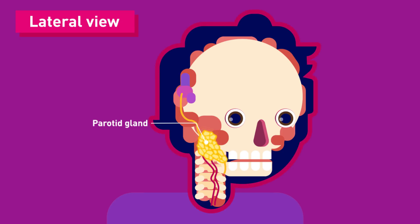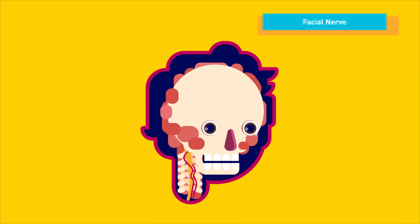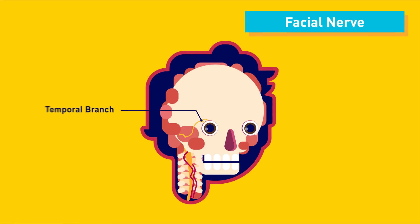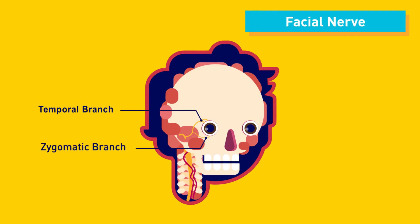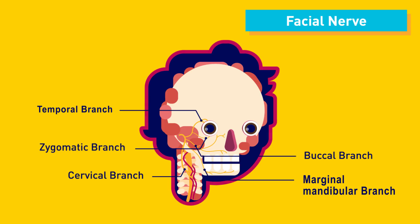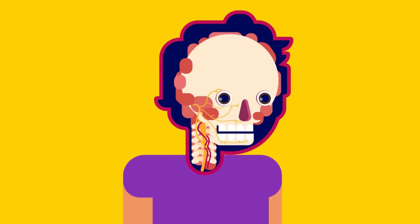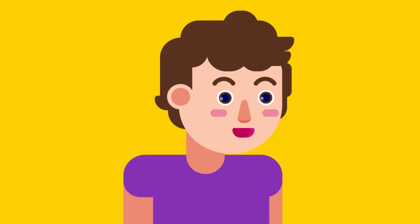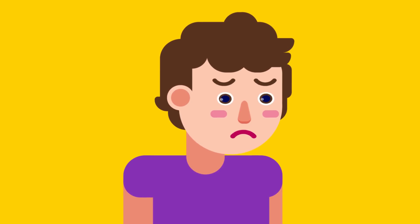Within the parotid gland, the nerve terminates by splitting into five branches: the temporal branch, which supplies the temporalis muscle on the face; the zygomatic branch, which supplies the zygomatic arch; the buccal branch, which supplies the buccal region; the marginal mandibular branch, which supplies the mandibular region; and the cervical branch, which supplies the cervical region. These branches are responsible for innervating the muscles of facial expression.